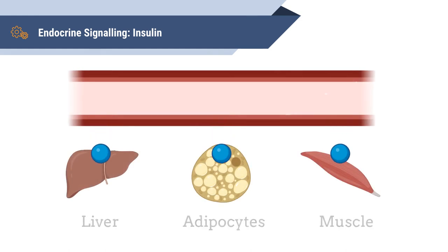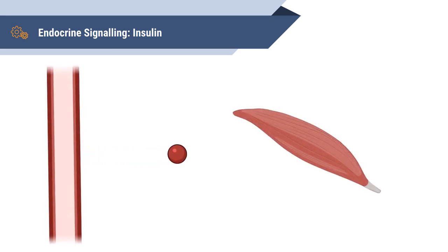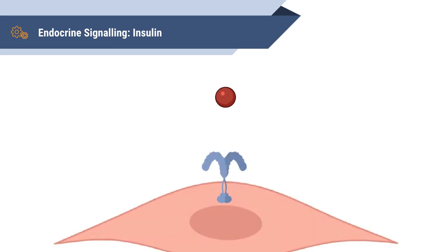Insulin promotes absorption into the liver, adipocytes, and skeletal muscle cells, where it is stored. Once insulin is released into the bloodstream, it travels to its target cell. In this case, we are looking at a skeletal muscle cell. Insulin then binds the insulin receptor that is present in the cell membrane.